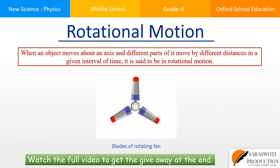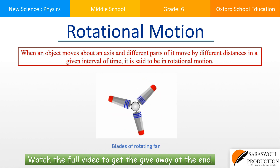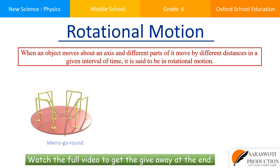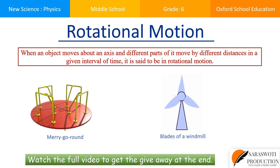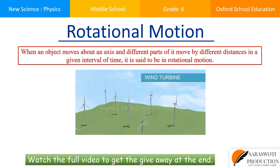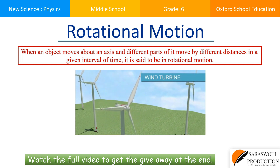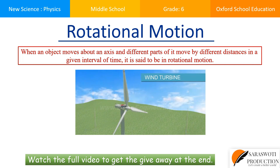Number two: rotational motion. When an object moves about an axis and different parts of it move by different distances in a given interval of time, it is said to be in rotational motion. Examples of objects undergoing rotational motion are the blade of a rotating fan, a merry-go-round, and blades of a windmill. When an object undergoes rotational motion, all of its parts do not move the same distance in a given interval of time. For example, the outer portion of the blade of a windmill moves much more than the portion closer to the center.